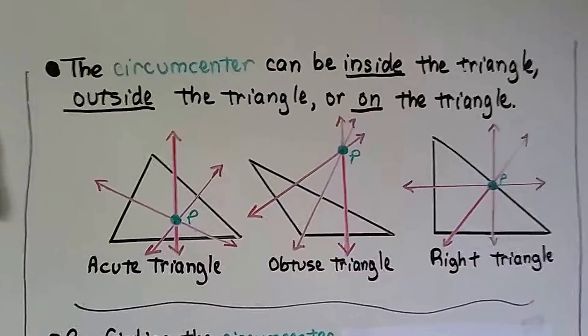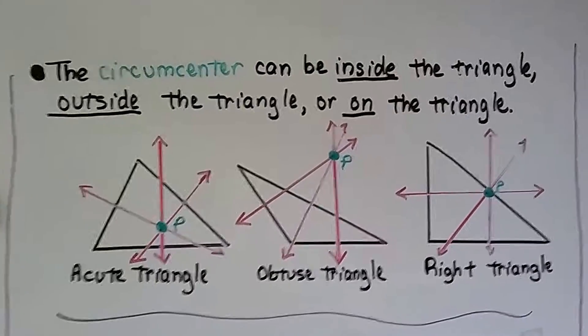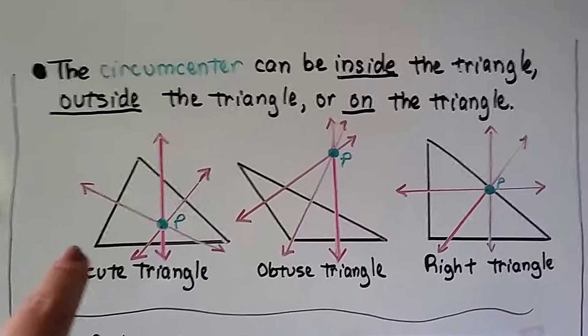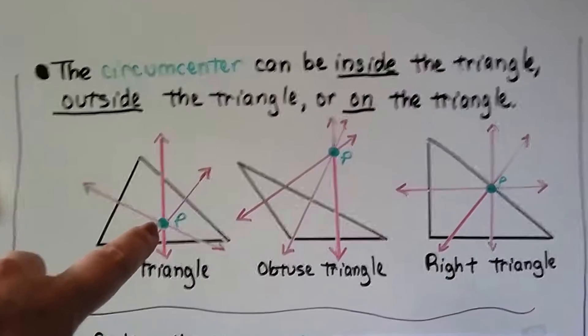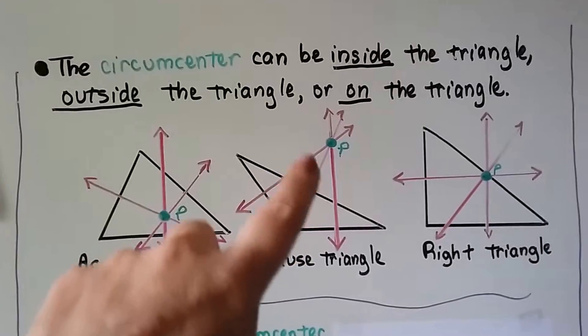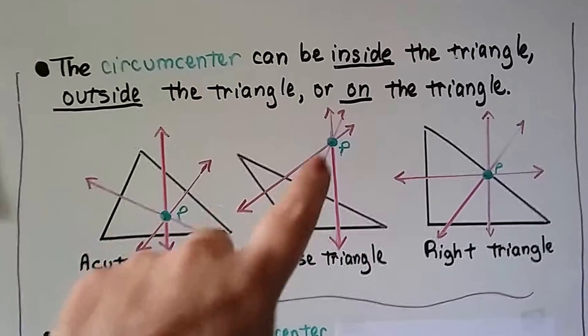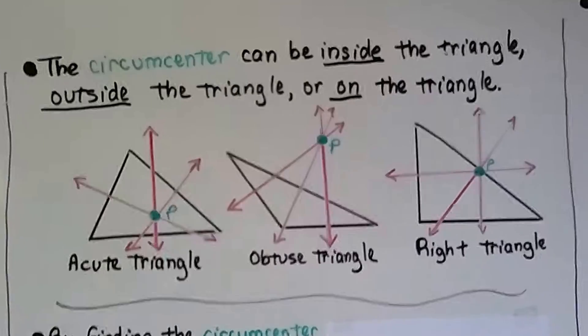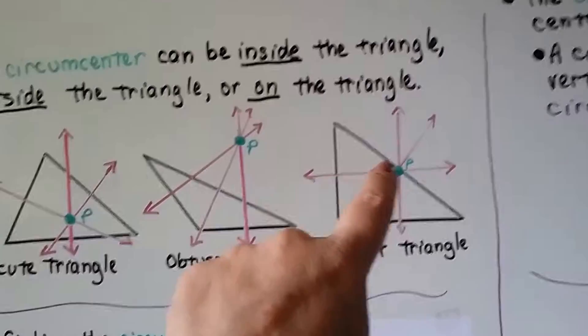The circumcenter can be inside the triangle, outside the triangle, or on the triangle. For an acute triangle, it's down here. For an obtuse triangle, when we draw the angle bisectors for each side, it ends up way out here on the outside. And for a right triangle, it's on the hypotenuse.